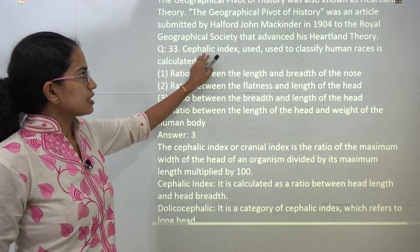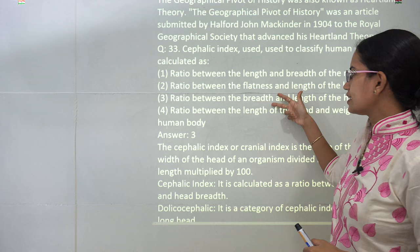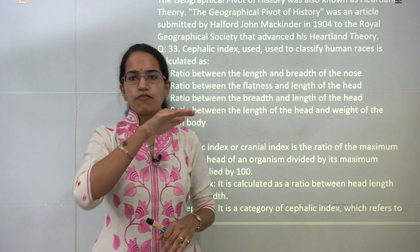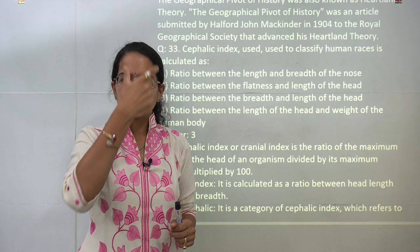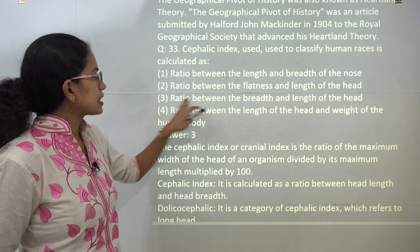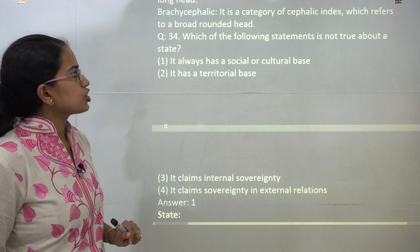The next question is the cephalic index, which deals with the index of the head. So B and C can be the only choices; the first and fourth cannot be correct. It talks about the ratio of breadth to length — therefore we have dolichocephalic, which are long-headed people, and brachycephalic, which are broad-headed people. So it's the correct ratio between breadth and length of the head.